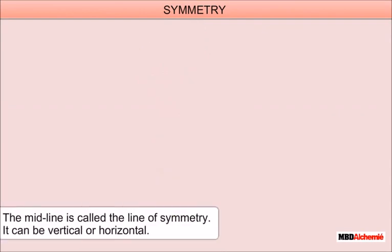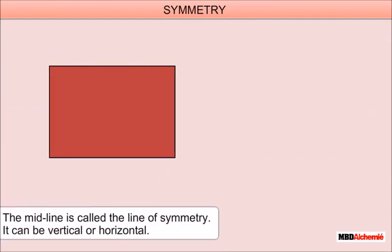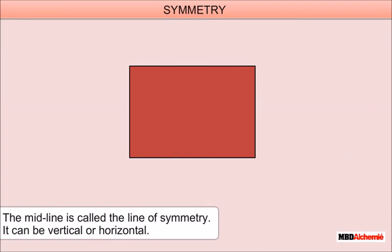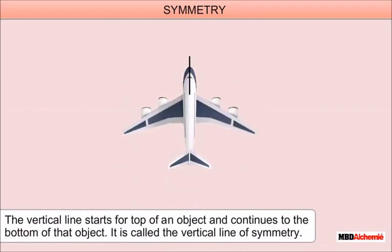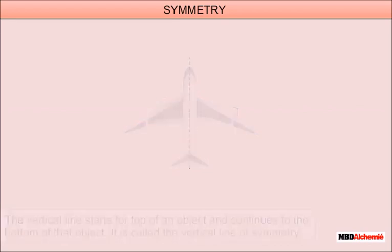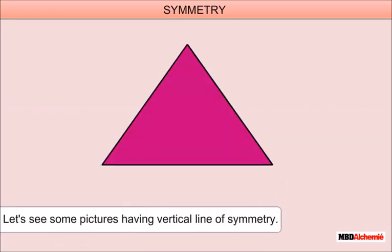The midline is called the line of symmetry. It can be vertical or horizontal. The vertical line starts from the top of an object and continues to the bottom of that object. It is called the vertical line of symmetry. Let's see some pictures having a vertical line of symmetry.